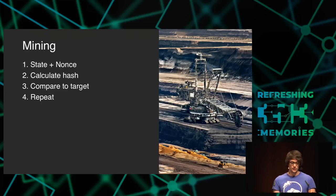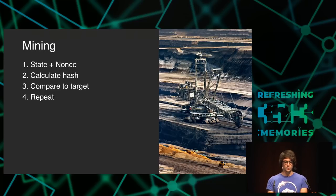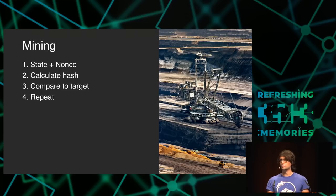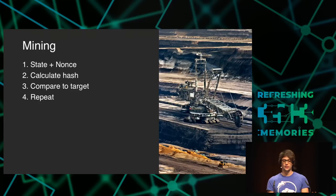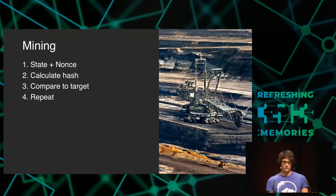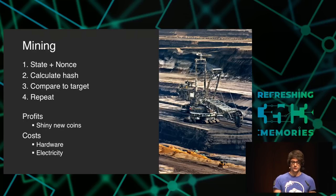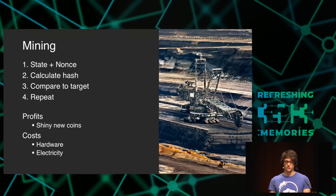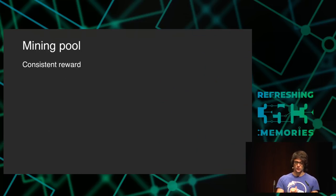Zunächst zum Mining generell: das ist der Prozess, in dem neue Coins hergestellt werden. Man braucht dafür den Status des Netzwerkes und einen Nonce. Aus diesen beiden berechnet man einen Hash, der wird mit einem Zielwert verglichen - man sucht also einen Hash, der eine sehr niedrige Nummer hat, also mit sehr vielen Nullen am Anfang. Bei Bitcoin sucht man einen Hash mit 19 Nullen am Anfang, was natürlich sehr selten ist. Deswegen brute-forced man sehr viele Hashes und zum Schluss findet man hoffentlich einen passenden Hash - das bezeichnet man als Mining. In diesem Prozess wird Rechenleistung eingetauscht gegen Coins, und das ist nur sinnvoll, wenn der Coin mehr wert ist als die Elektrizität, die er kostet.